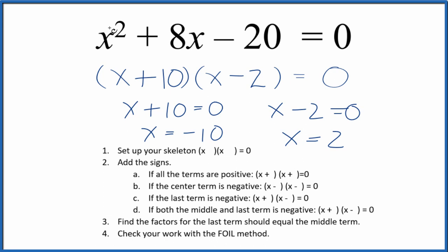If you put 2 in for x here, you do the math, all of this will equal zero. Likewise, if you put negative 10 in for x here and you do the math, all of this equals zero. If you were to use the quadratic equation, you would get these same numbers here.